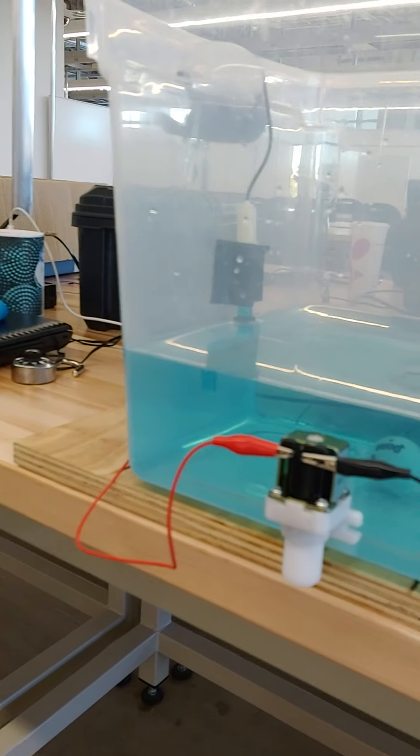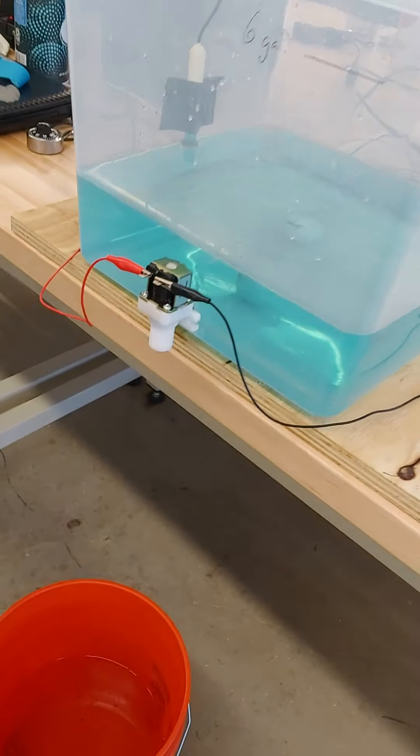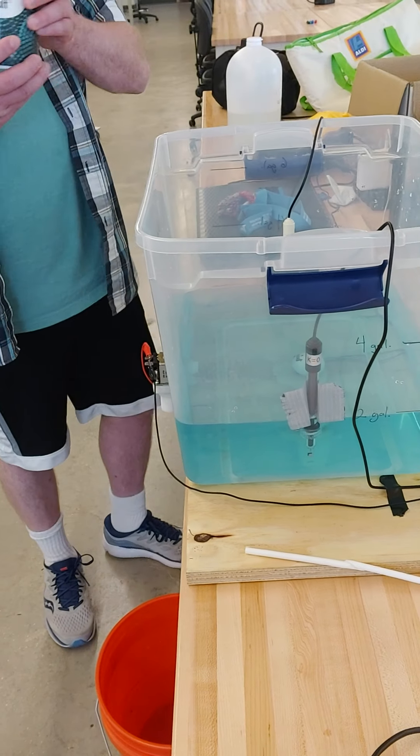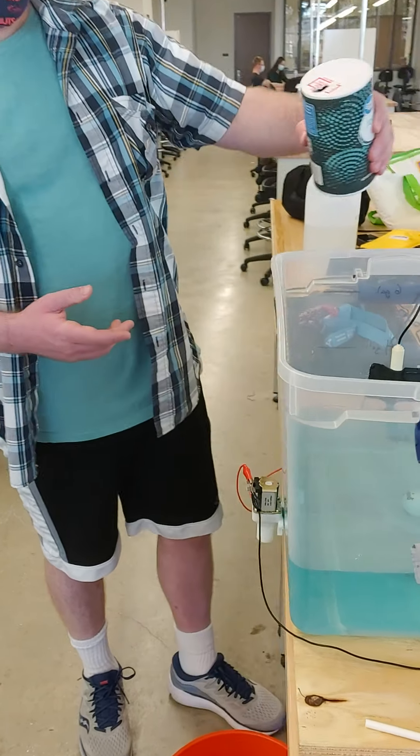It also takes into account small movement that we make on the table that it picks up. So right now we're gonna be dumping in salt so we could see the EC level change.